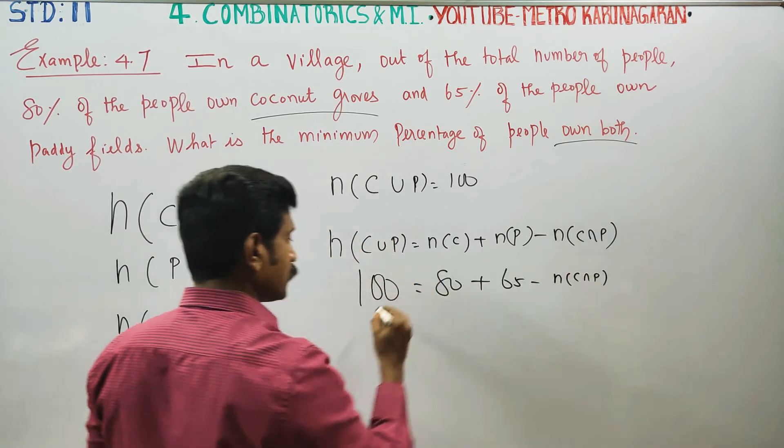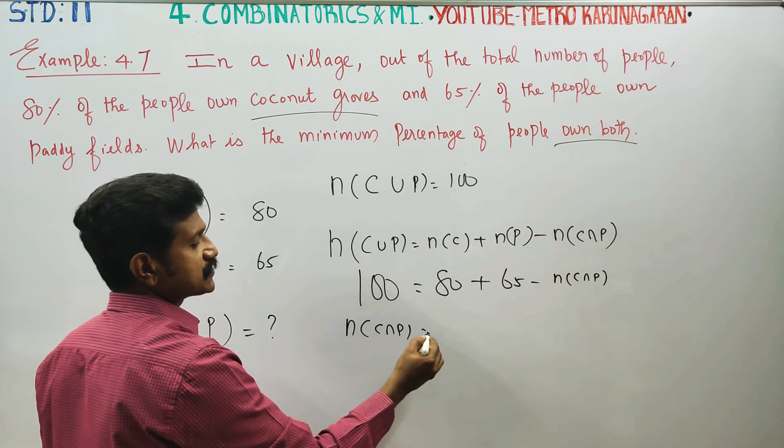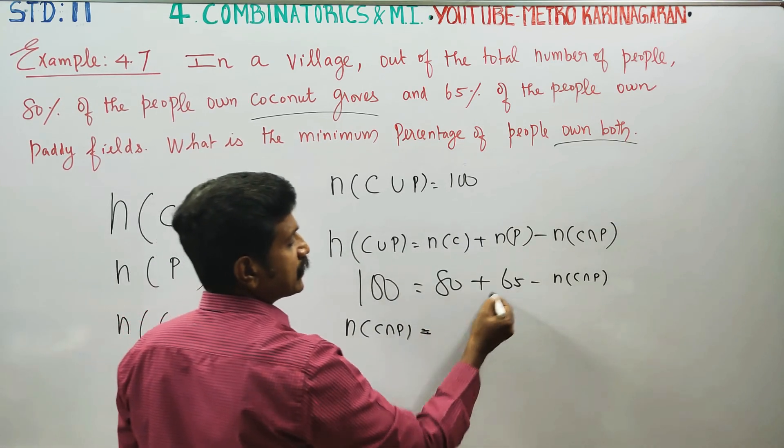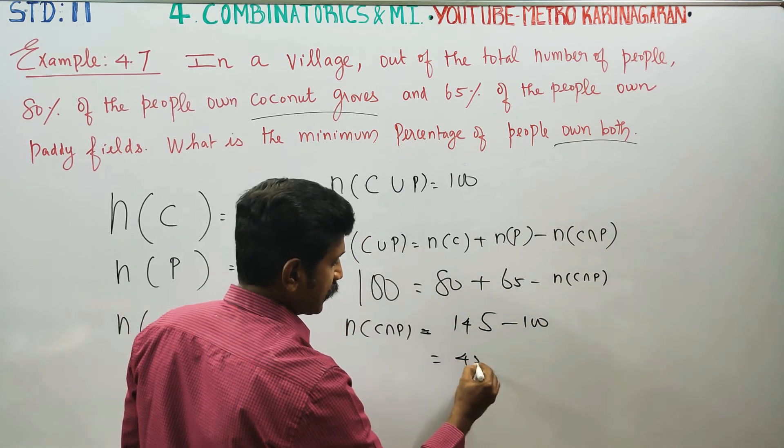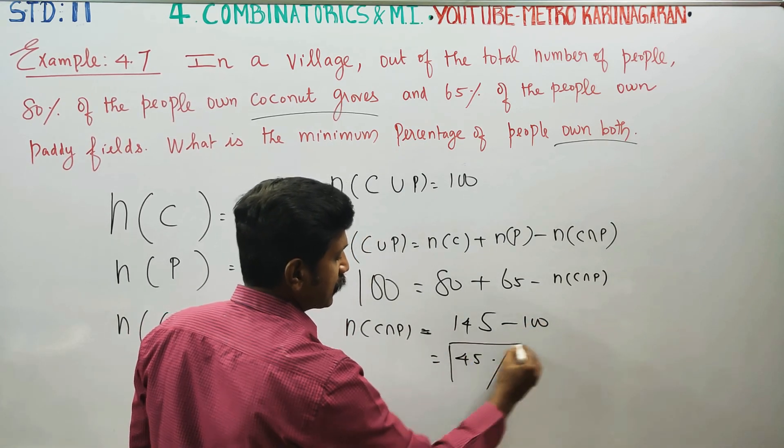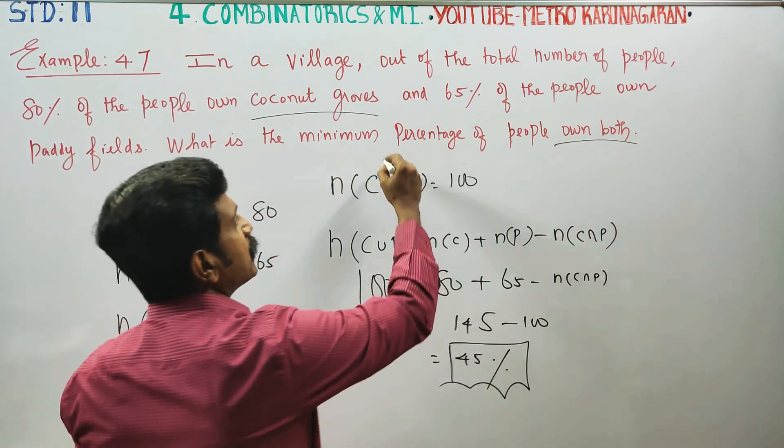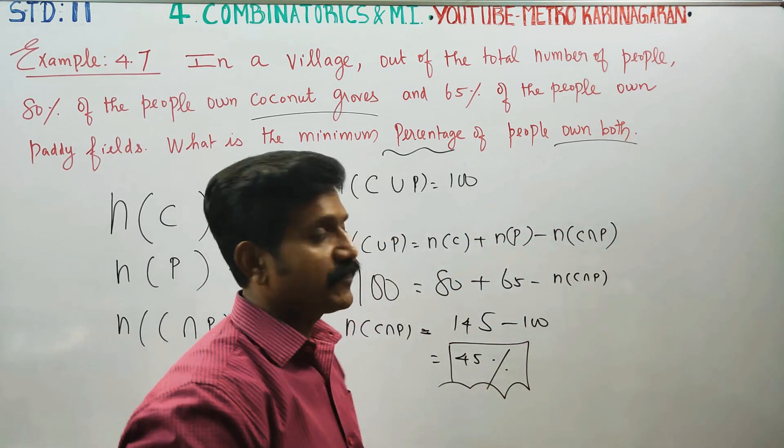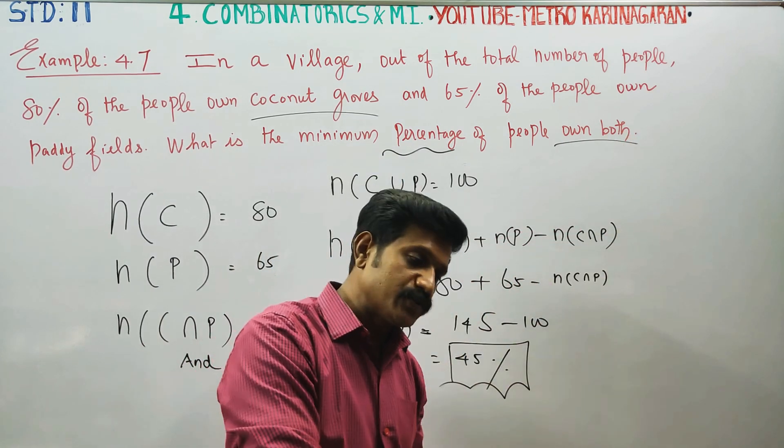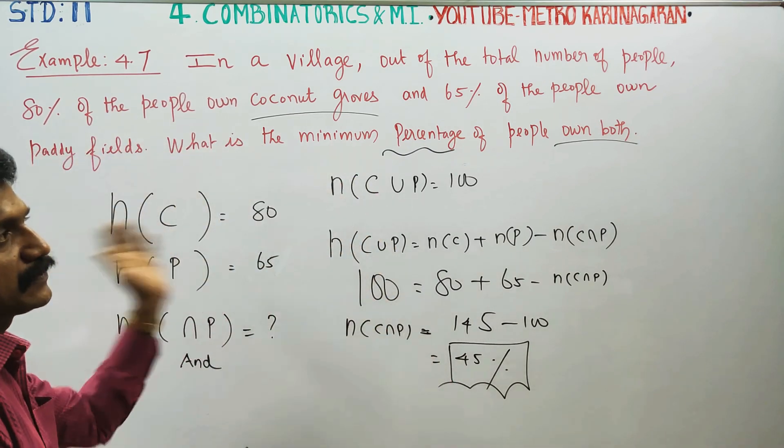n(c intersection p), coconut intersection p, is equal to 145 minus 100, which equals 45%. You can conclude the total sum minus percentage is equal to the minimum percentage of people who own both coconut as well as paddy. Thank you.